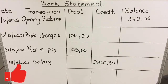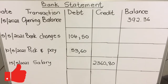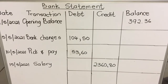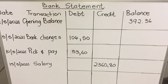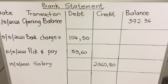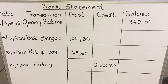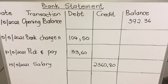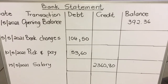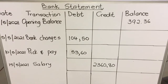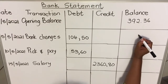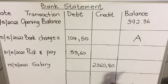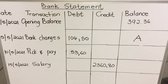Now, let's say you want to know how much you have at a particular date — that will be the closing balance. In an exam they might put an A here and an A somewhere else, and the question says: find A.